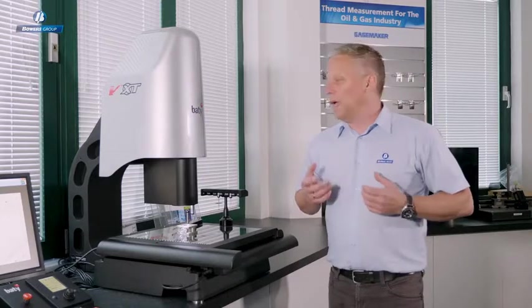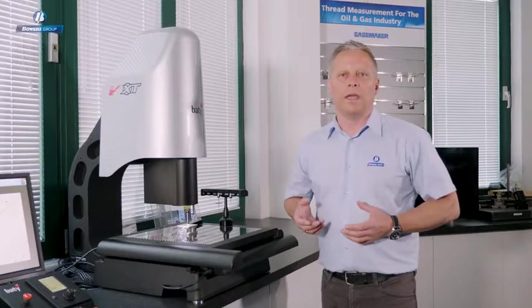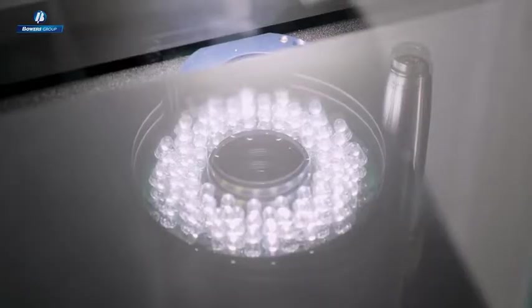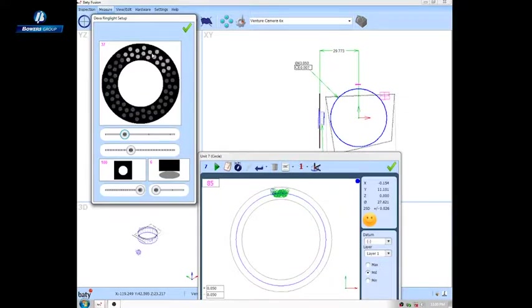Lighting on any vision system is absolutely critical. Our systems all come with our own design of LED lighting. The top light here consists of 64 LEDs and if I turn the light control on for that now you can see we have a graphic here that replicates the underside of that light head.